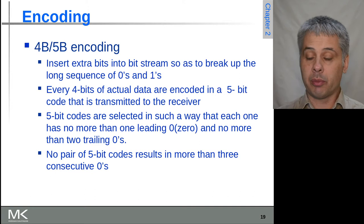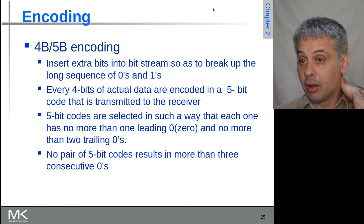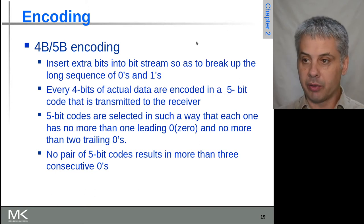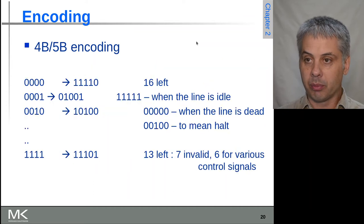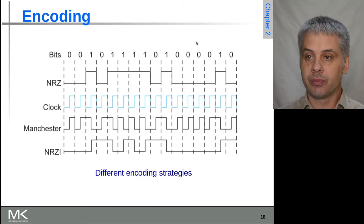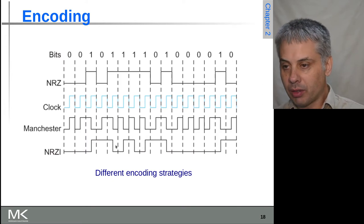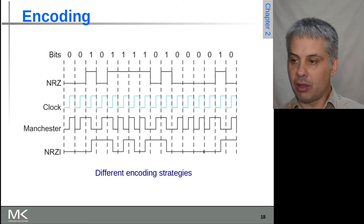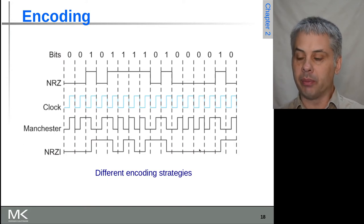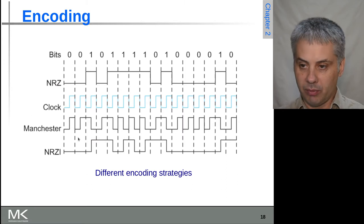So one way to solve some of these problems with NRZI - brief refresher, come back - NRZI is nice in that it requires a lower maximum frequency than Manchester encoding, but if we have too many zeros in a row, we still have this problem that we might lose synchronization and lose tracking of the high and low signals.